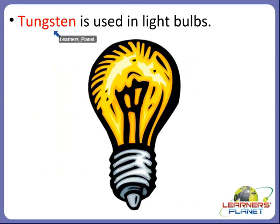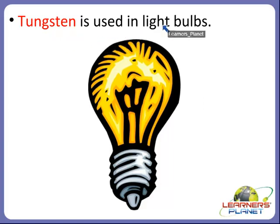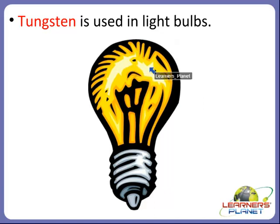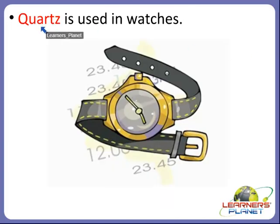Tungsten is also a type of mineral which we use in light bulbs. You must have seen bulbs in your home — these bulbs are made up of tungsten.